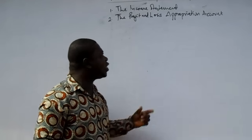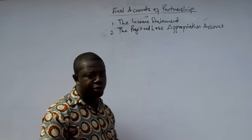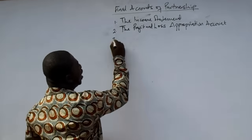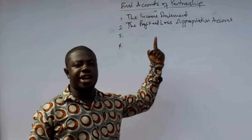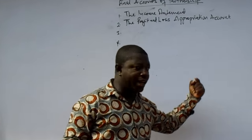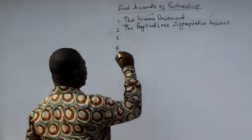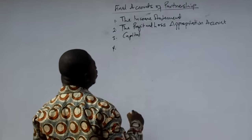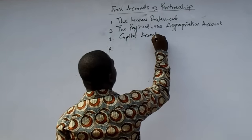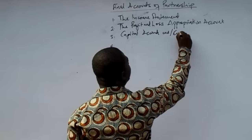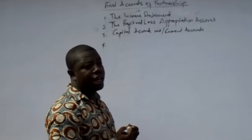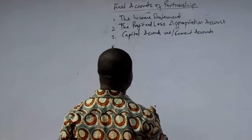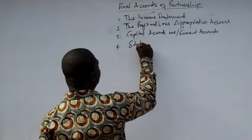After the profit and loss appropriation account, we prepare the statement of financial position. Before we prepare the statement of financial position, we may have to adjust the capital accounts or the current accounts. There could be adjustments of the capital accounts and/or current accounts, depending on the capital account system that we are maintaining. After we adjust our capital and current accounts where necessary, we will prepare the statement of financial position.